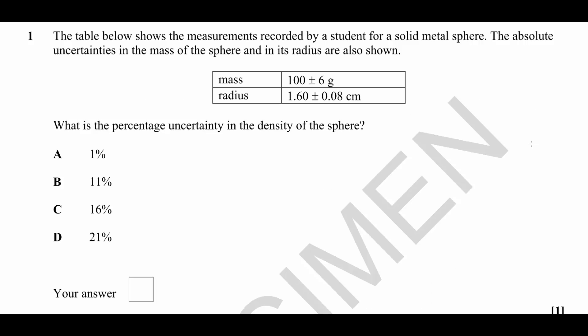Question number one is a question about uncertainties. The table below shows the measurements recorded by a student for a solid metal sphere. The absolute uncertainties in the mass of the sphere and in its radius are also shown. What is the percentage uncertainty in the density of the sphere?